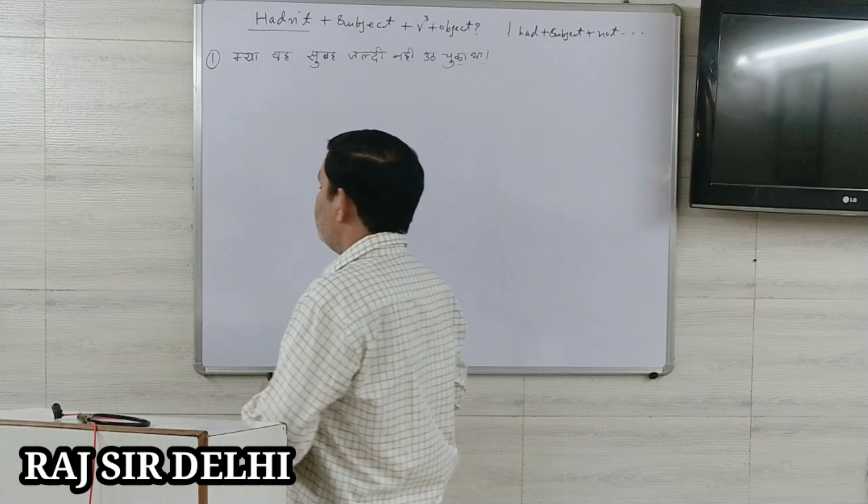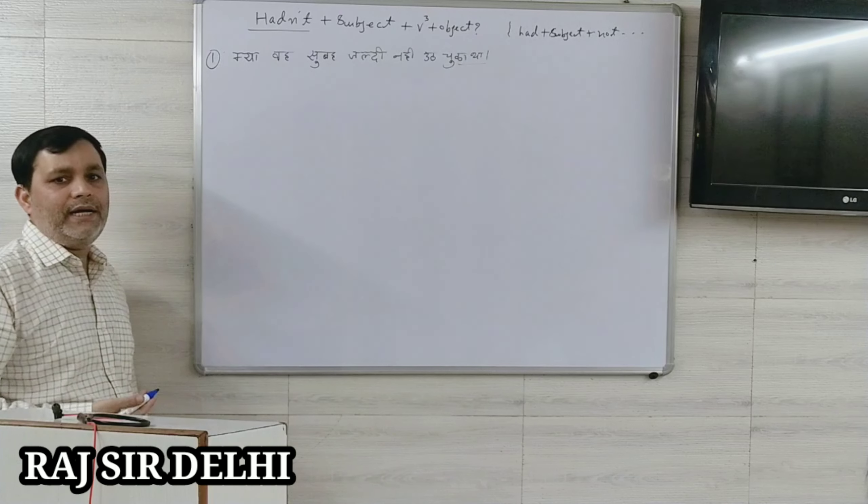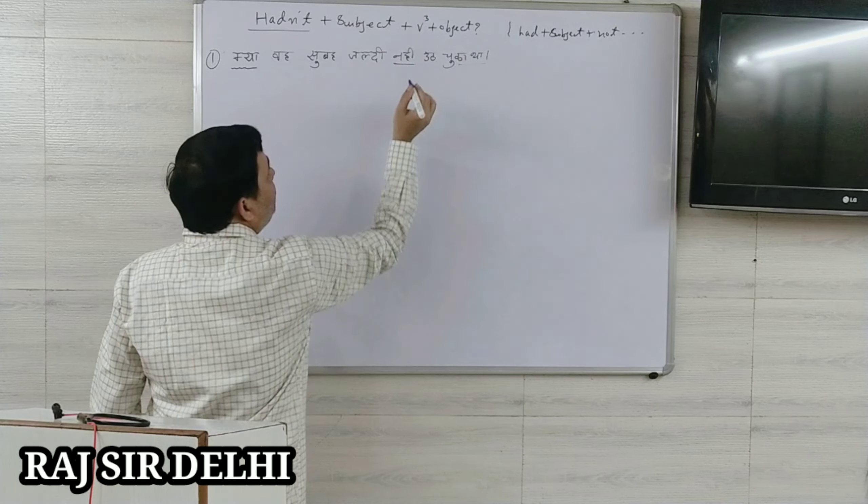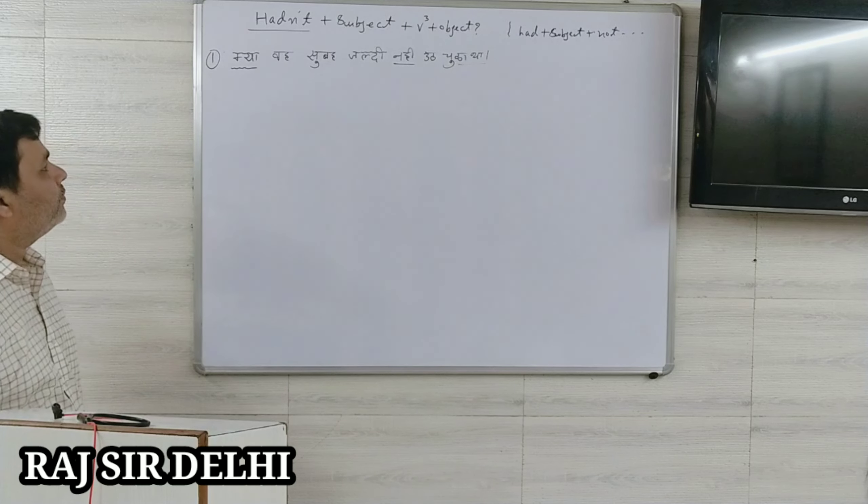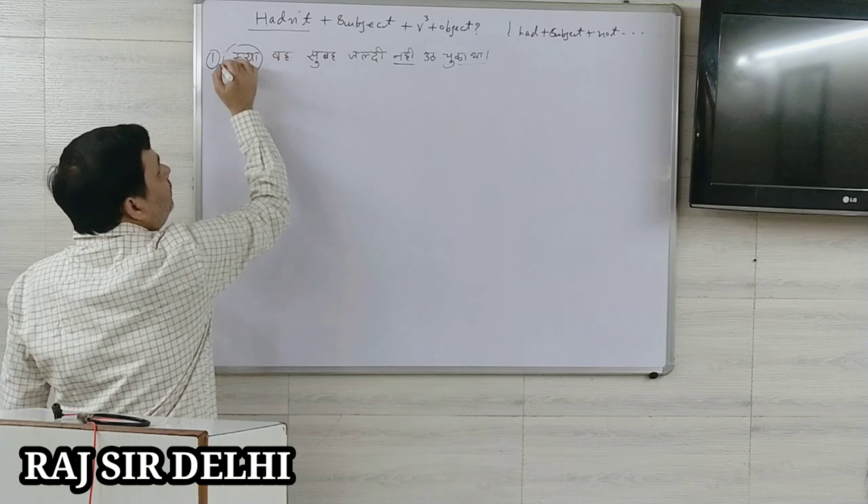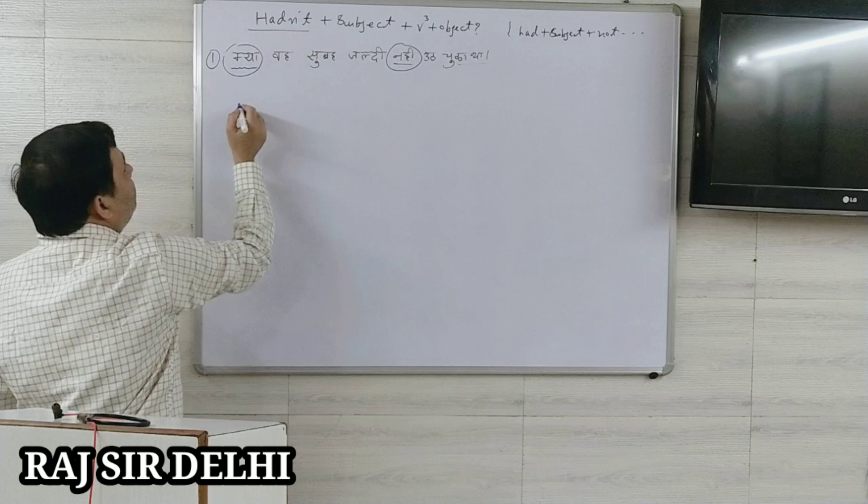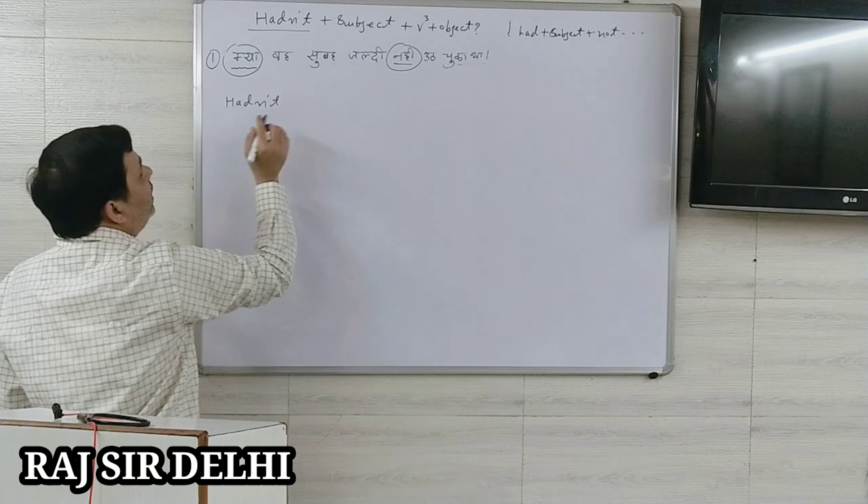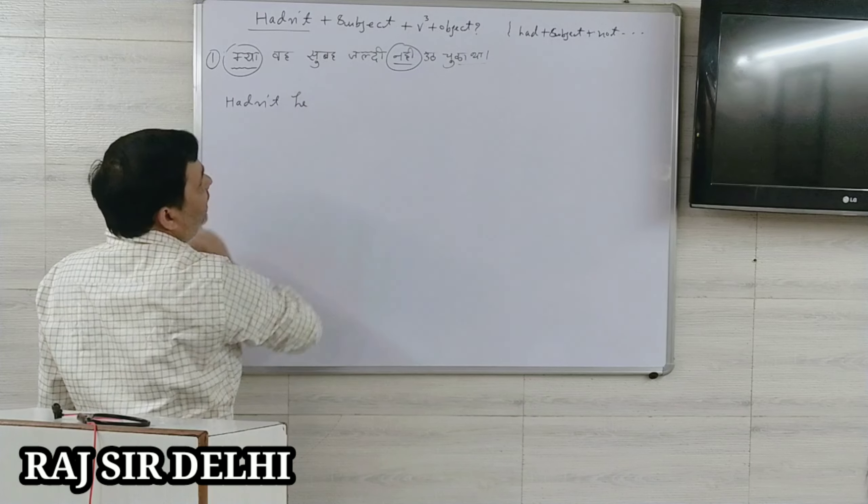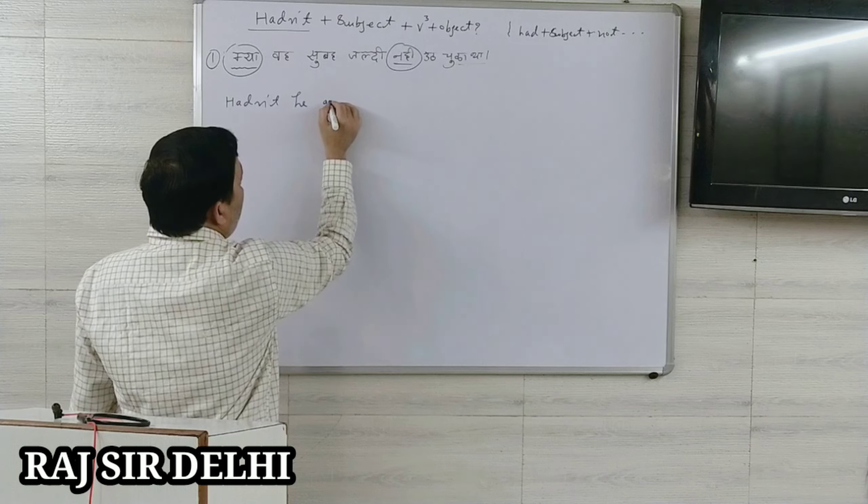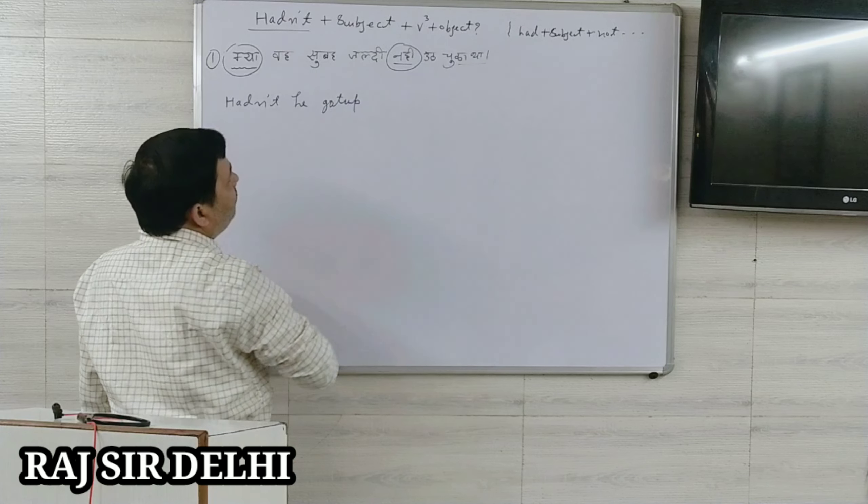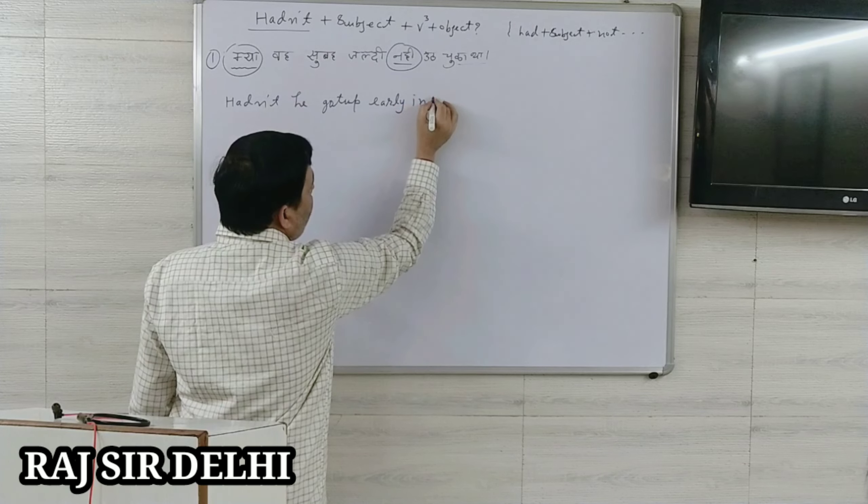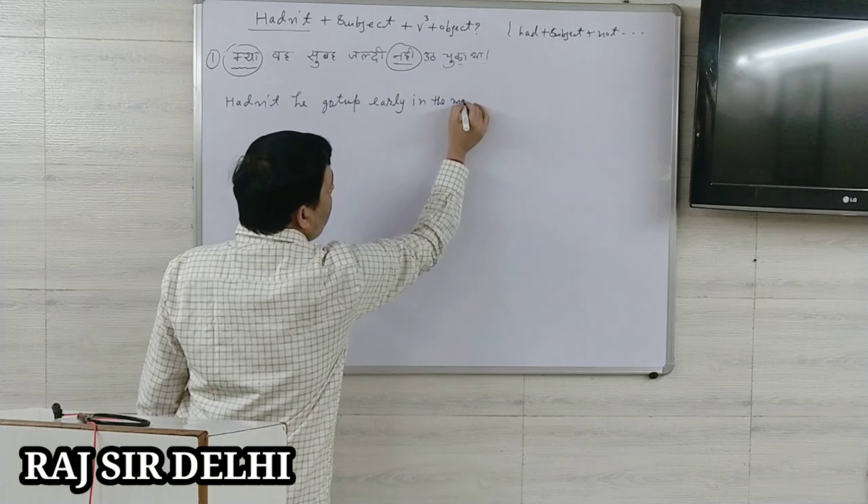Now the sentence is interrogative and interrogative negative. What and not? Hadn't. Hadn't he. Got up. Early in the morning. Early in the morning.